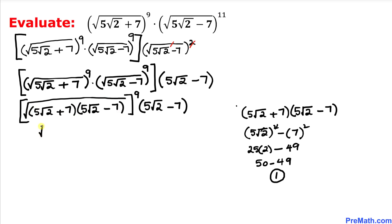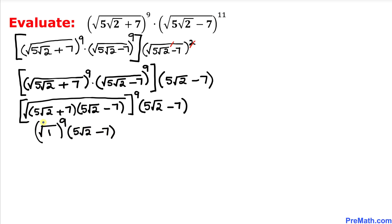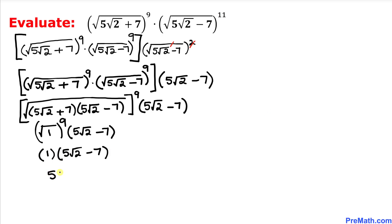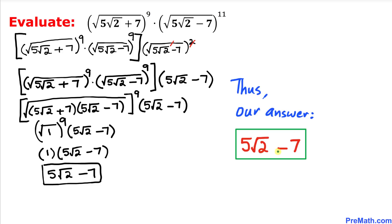So the expression becomes square root of 1, whole power 9, times 5 times square root of 2 minus 7. Since the square root of 1 is 1 and 1 to the power 9 is still 1, we can replace that whole part by 1. Multiplying by 1, our simplified answer is simply 5 times square root of 2 minus 7.